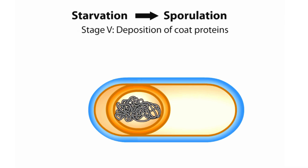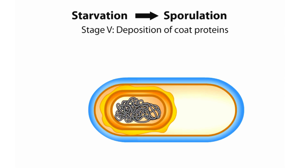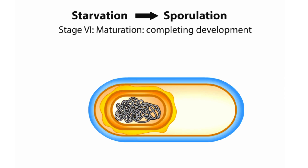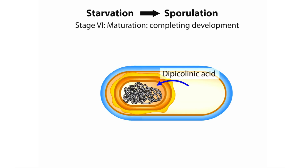In Stage 5, layers of coat proteins are deposited on the outer membrane. In Stage 6, development of the spore's resistance to heat and chemical insults is completed. This last stage includes the synthesis of dipicolinic acid in the mother cell, which is taken up by the core of the spore. Dipicolinic acid is important in maintaining dormancy and in promoting spore dehydration, a characteristic that makes the spore heat-resistant.